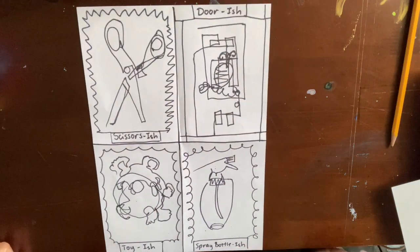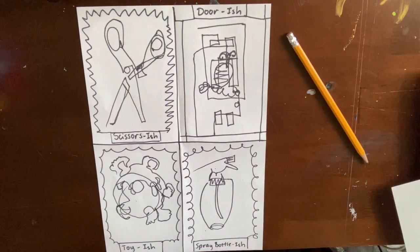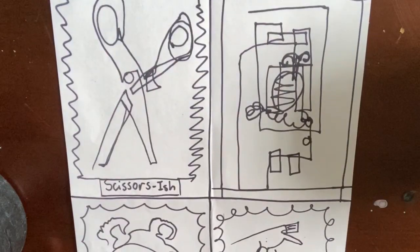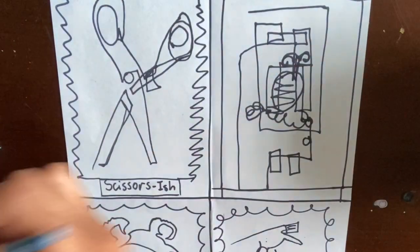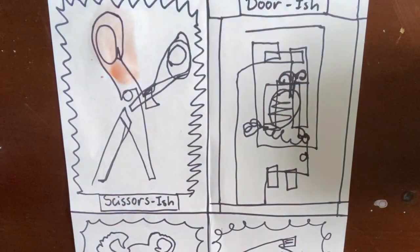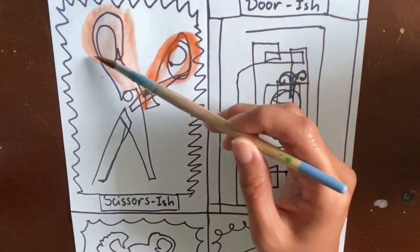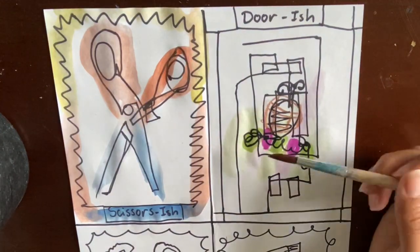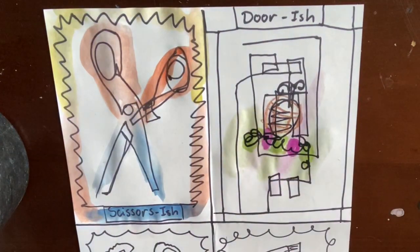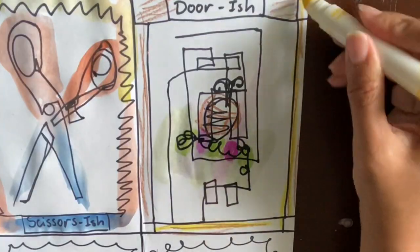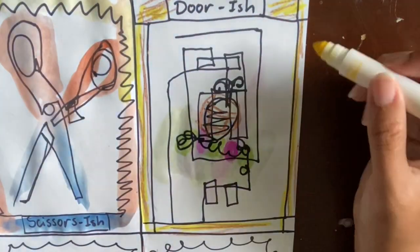So now that you have your ish drawings, you are done. If you'd like to, you can paint or color in. I encourage you to do it though, in ish kind of fashion. So you could blind paint if you want to, or just fluidly paint or draw, add texture you see. But keep it loose. Keep it ish.